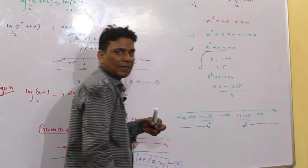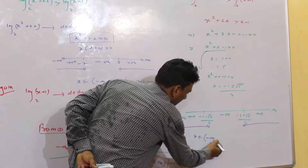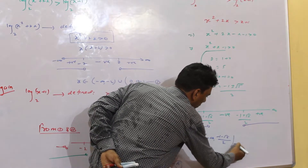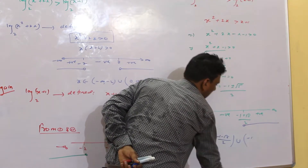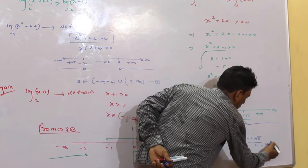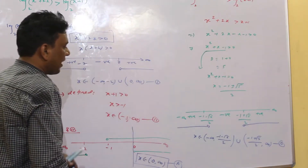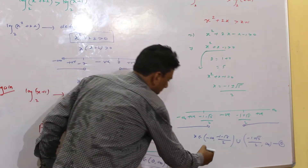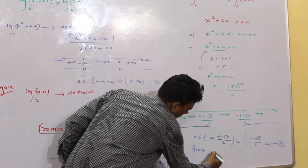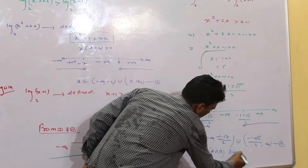यहां से x belong to (−∞, (−1 − √5)/2) ∪ ((−1 + √5)/2, ∞) - यह है Set B. Finally from Set A and B, A intersection B give the result - यहां से final answer find out कर लें।